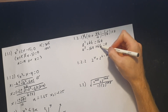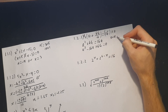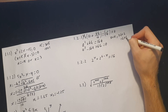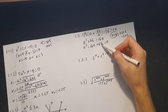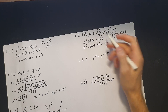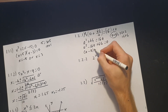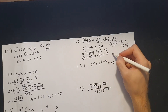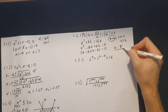We need factors of 64 that give us 16 — 8 × 8 works. Both brackets carry a negative, so (a − 8)(a − 8) = 0, therefore a = 8.